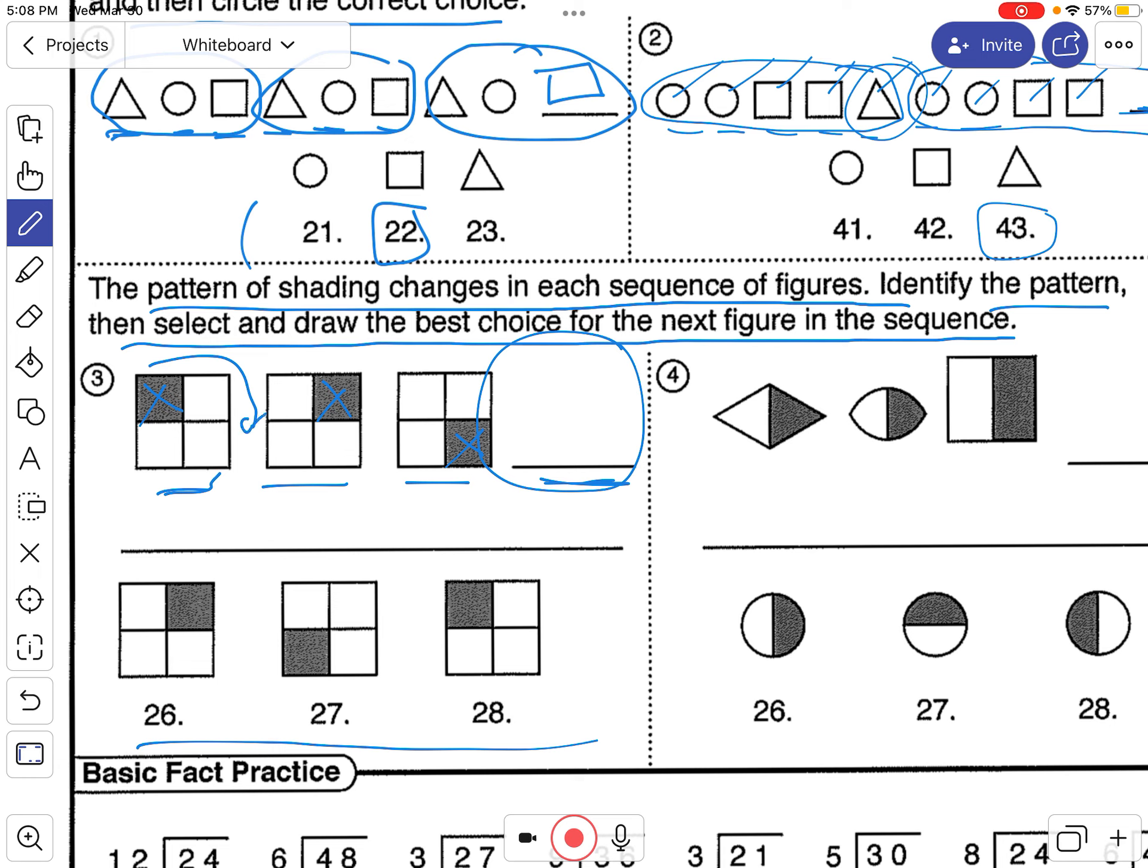So it's kind of circling around this way, right? Everything's moving around, which means it's got to continue to move around. So we've got to shade in that one on the next one here. So you should have drawn this and then shaded in that piece.